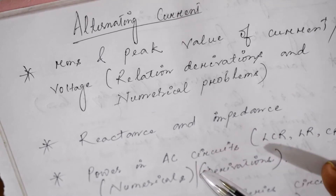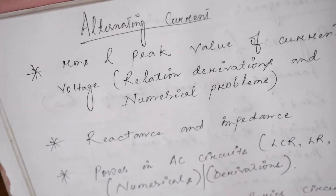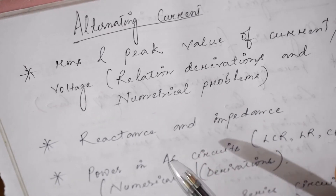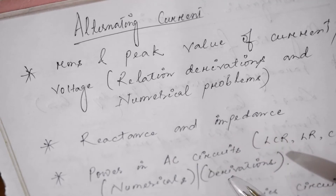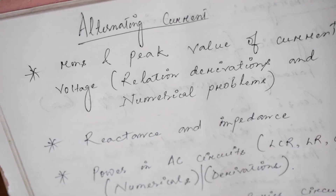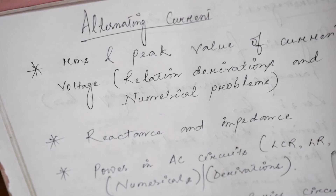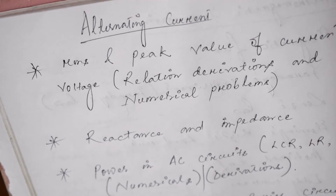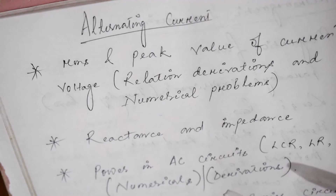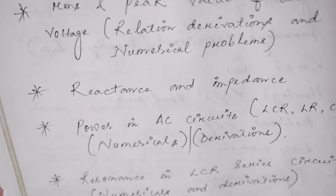The next important topic is reactance and impedance — what is reactance and what is impedance. This includes XL (inductive reactance) and XC (capacitive reactance), and the value of Z (impedance). You will also need to study the phasor diagram for a purely resistive circuit, a purely inductive circuit, and for an LCR circuit.